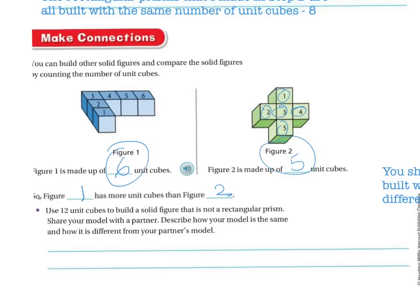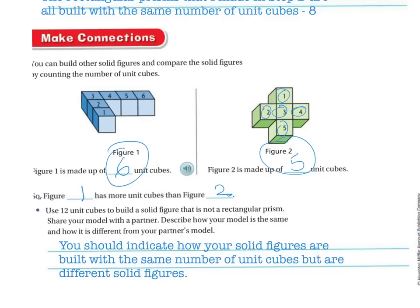Now use unit cubes to build a solid figure that is not a rectangular prism and share your model with a partner. Describe how your model is the same and how it is different from your partner's model. There are cubes in the back of the room you're welcome to use. You should indicate how your solid figures are built with the same number of unit cubes but are different figures — the cubes in the back link together in different ways so you can build lots of different kinds.